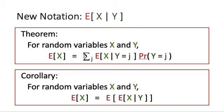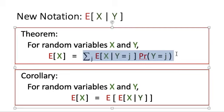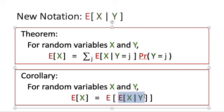Looking at this summation, it is actually representing the expected value of something. We can write it compactly as the expected value of the random variable E[X | Y]. The expected value of this random variable is exactly this formula, which equals E[X]. So we have: E[X] = E[E[X | Y]].